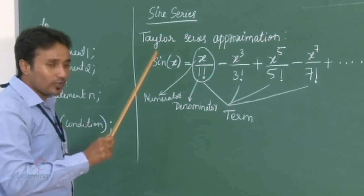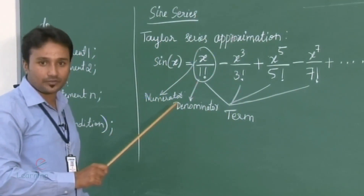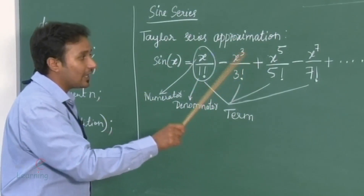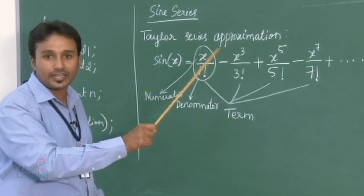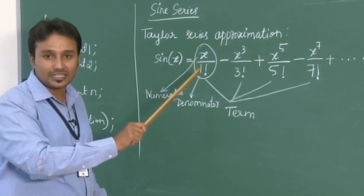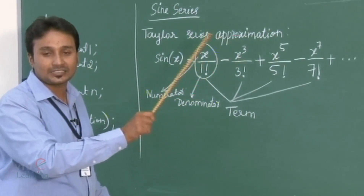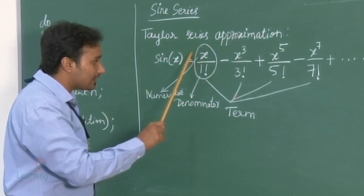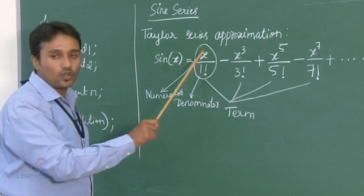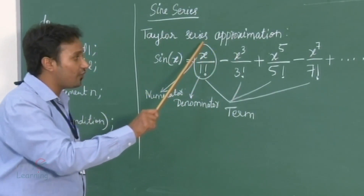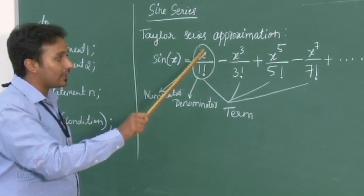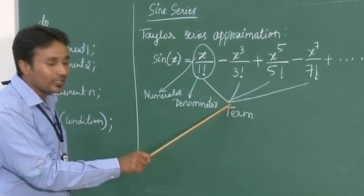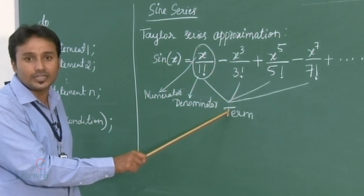We need to carefully observe that each and every term takes an alternating plus and minus sign. This entire term, which constitutes a numerator part and a denominator part, is together called a term.